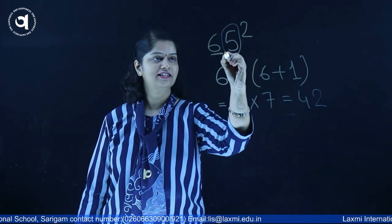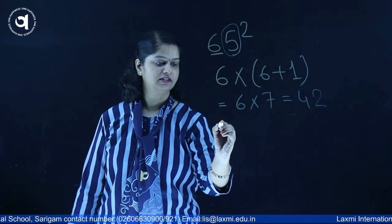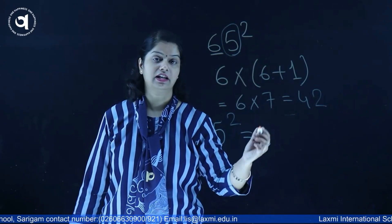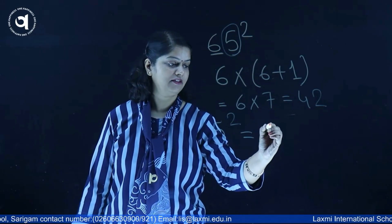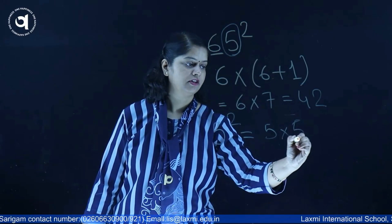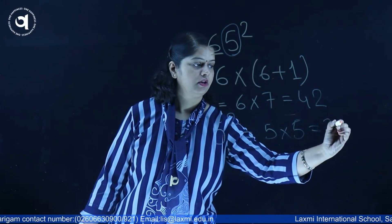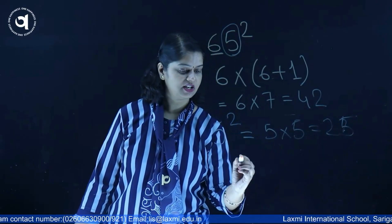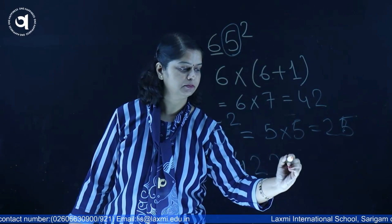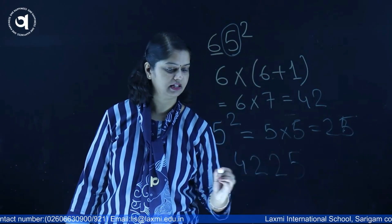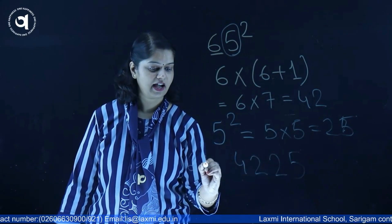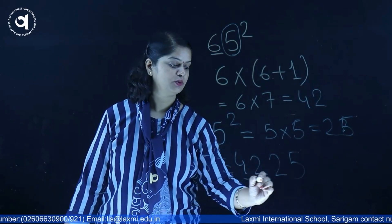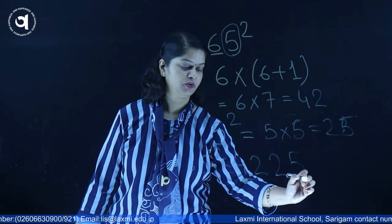Now let us take the second number. The second number is 5 and we all know the square of 5 is 25. So now what we have to do? We just have to take both the numbers together. So the square of 65 is 4,225.